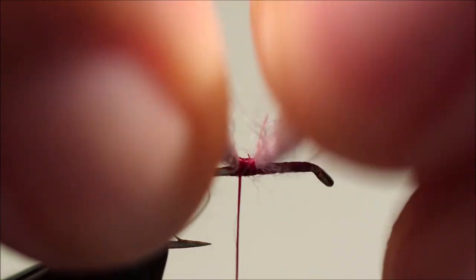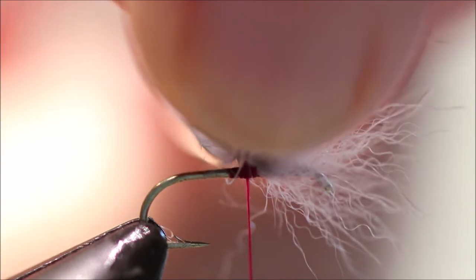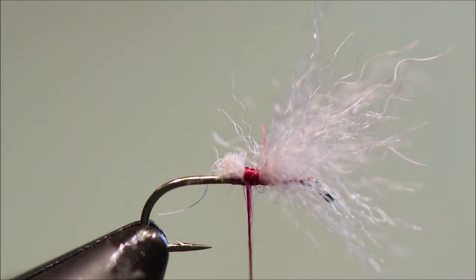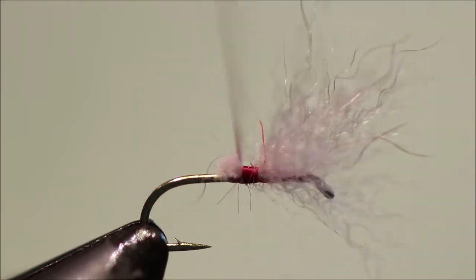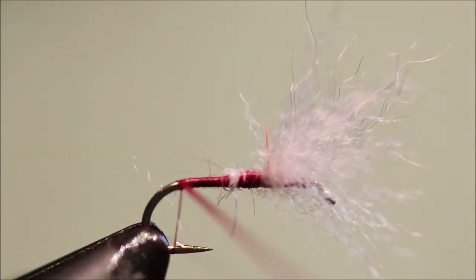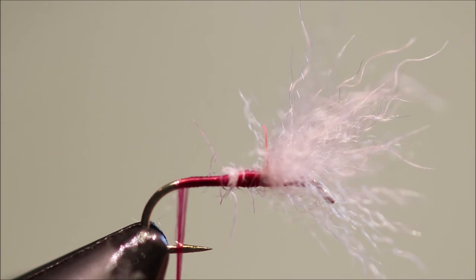Take a few wraps to secure it, and then hold the butt fibers vertically, and cut them with a horizontal cut—that will taper the edge slightly. Run your thread back until the start of the bend, so that your thread will be hanging right in line with the barb.